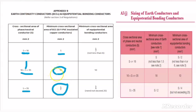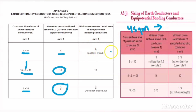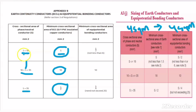Let me give you an example to better understand. Suppose I have a conductor size of 4 mm², which is a phase conductor size. Then what would be the ECC conductor size? The ECC conductor size will also be 4 mm². Because as per the rule, when the phase conductor is up to 16 mm², the ECC conductor will be the same as the phase conductor size. Now let us take another example — suppose I have a 16 mm² cable.